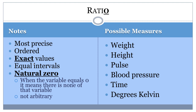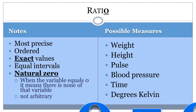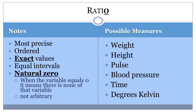Ratio measurement is the highest level possible for data. Like interval data, ratio data is ordered with known and measurable intervals between each value. What differentiates it from interval-level data is that the zero is absolute. The zero occurs naturally and signifies the absence of the characteristic being measured. Remember that ratio ends in an O — therefore, there is a zero.